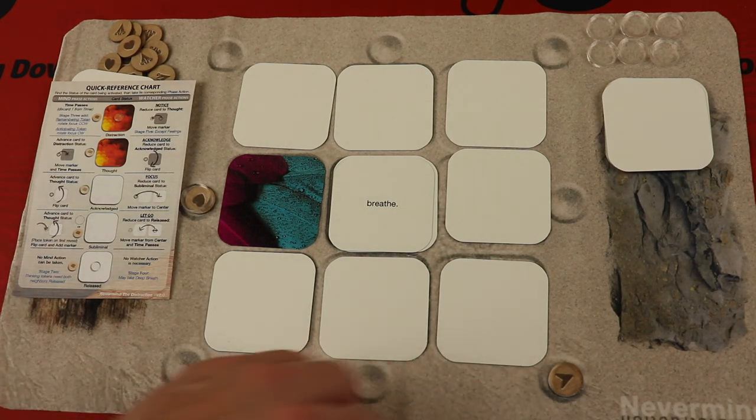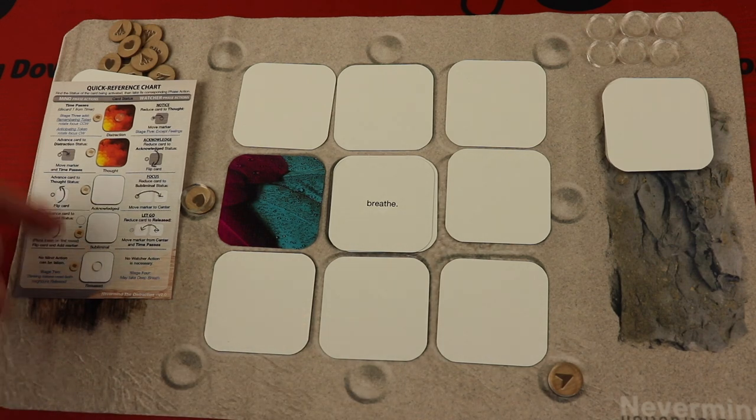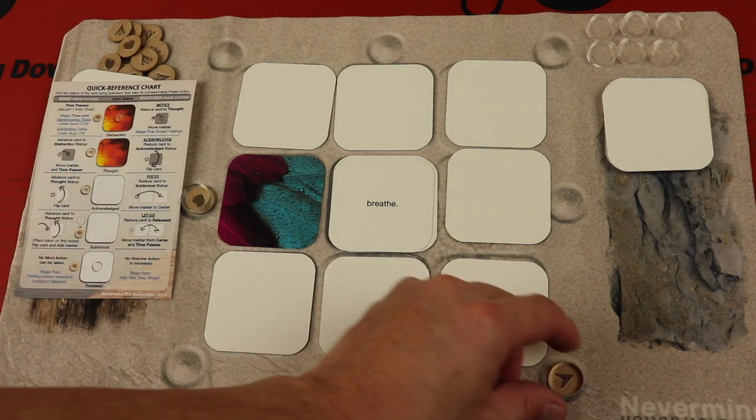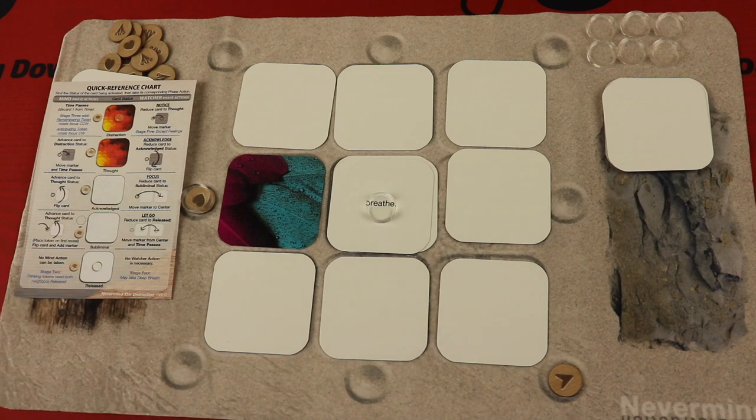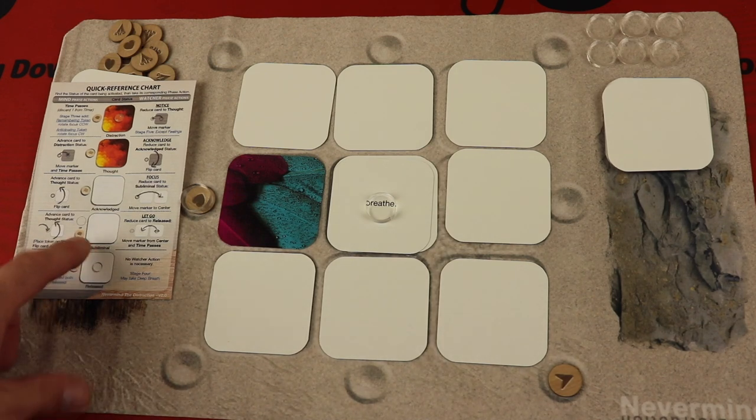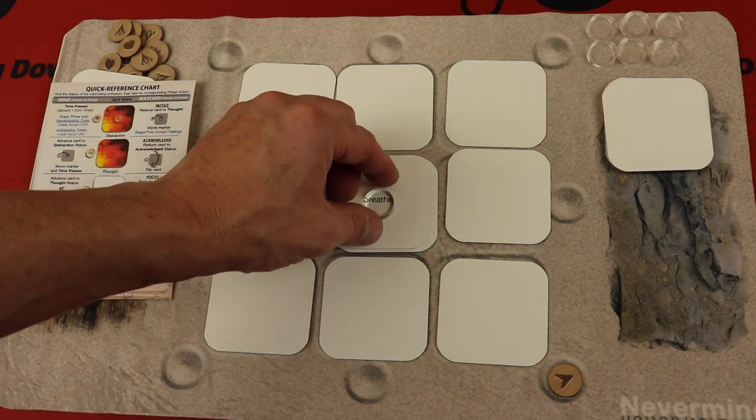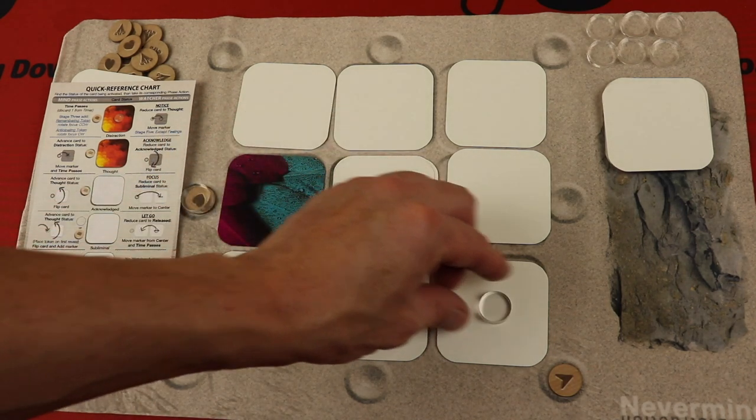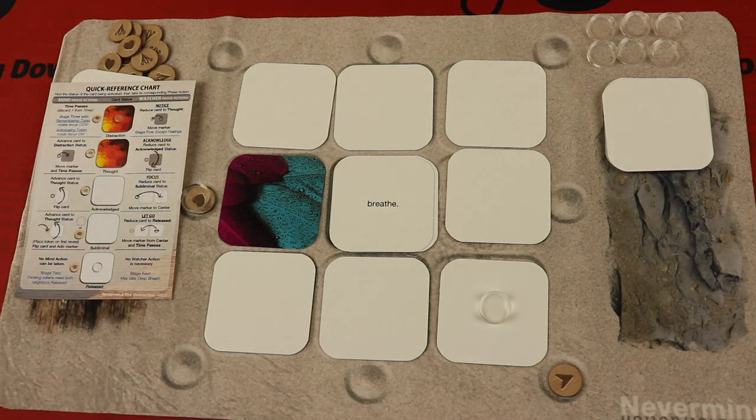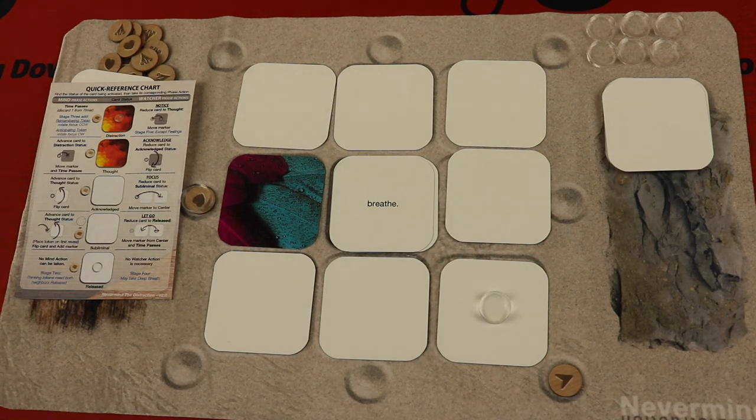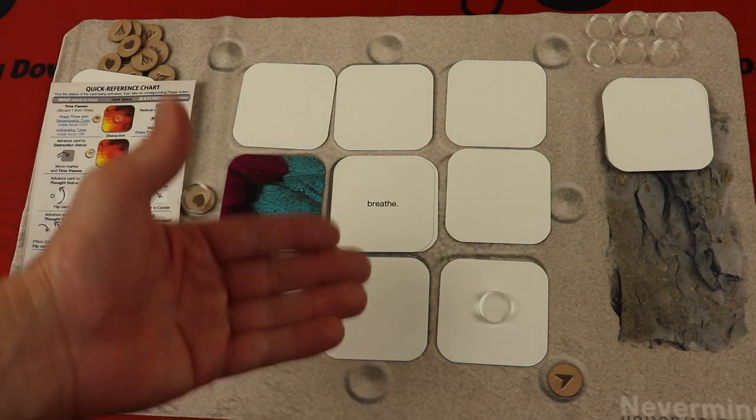If it was already acknowledged like this and it was your turn, you could take it from acknowledge to subliminal, always going towards the bottom here. And that's by taking this and put it on the breathe. And then if something is subliminal, you can essentially take it from subliminal to released by taking one of the awareness markers and placing it like that. Again, that's how you get it released, and that's the stages that you're trying to get through an action. Now you're only taking one of these actions per turn before the mind gets hacked again. But that's how basically you're dragging things back.